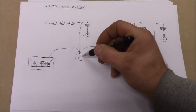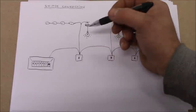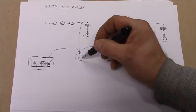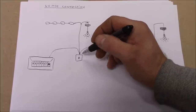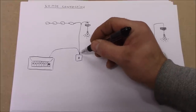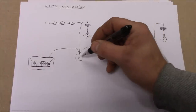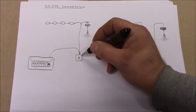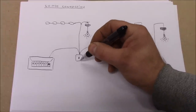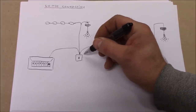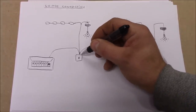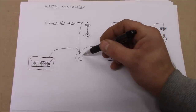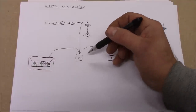At the switch, if we're using a one gang one-way switch, there are just three cables coming in — unless it's a two-gang or two-way switch, in which case there are more. With a one gang one-way switch we've got three cables, so the back box must be deep enough to accommodate them. I recommend using a minimum of 35mm depth for the back box.